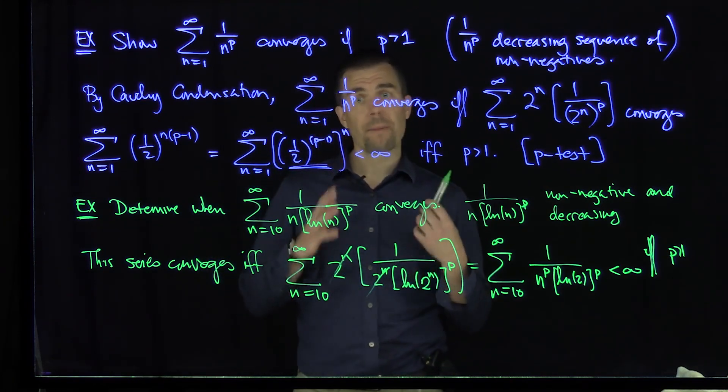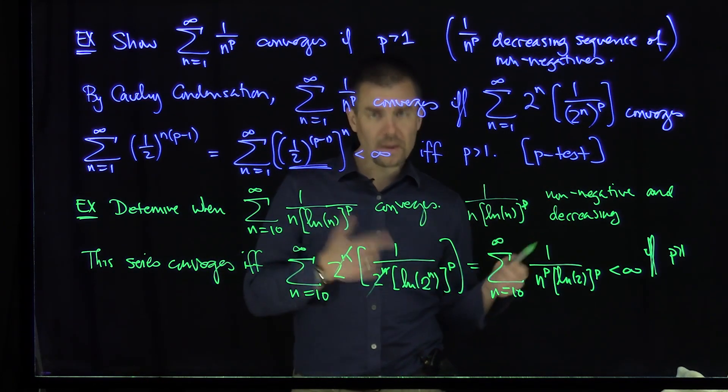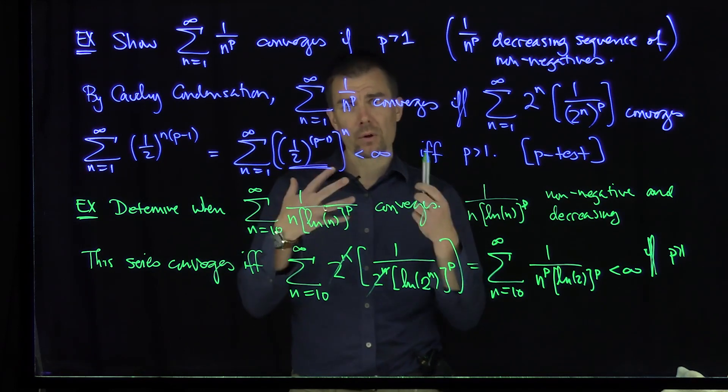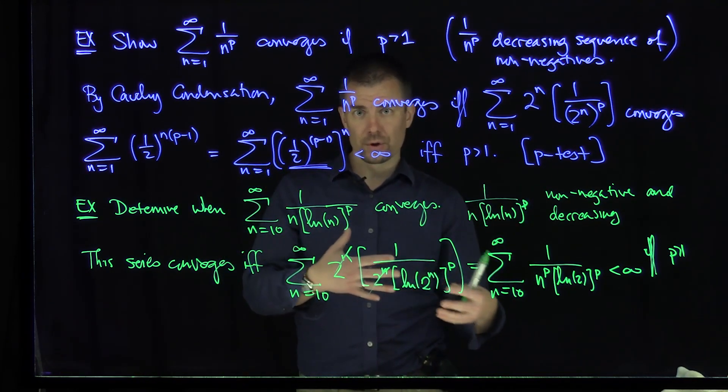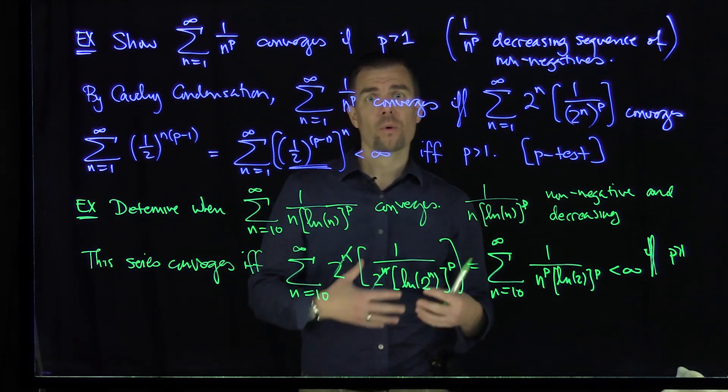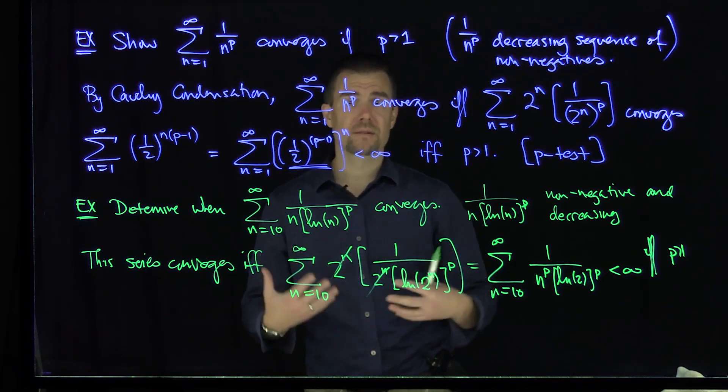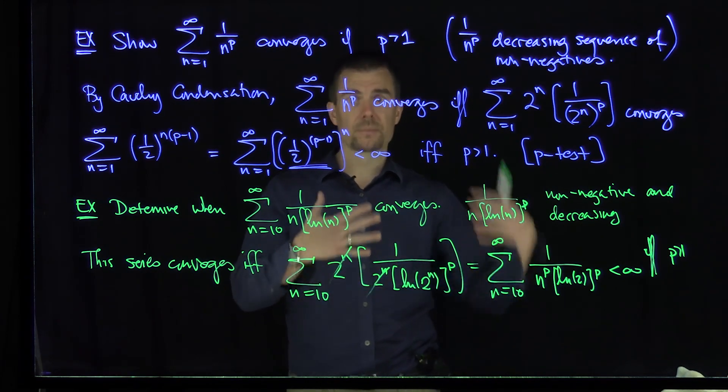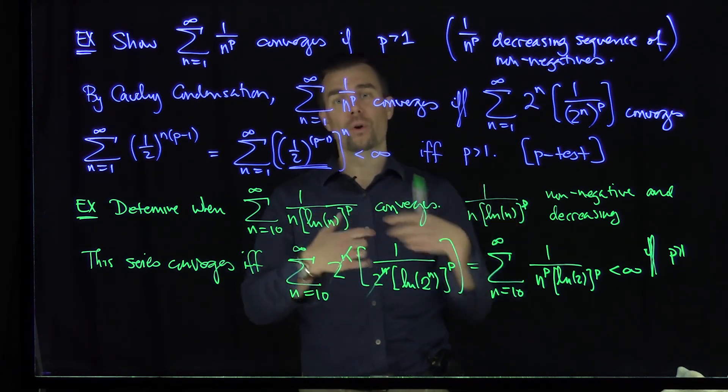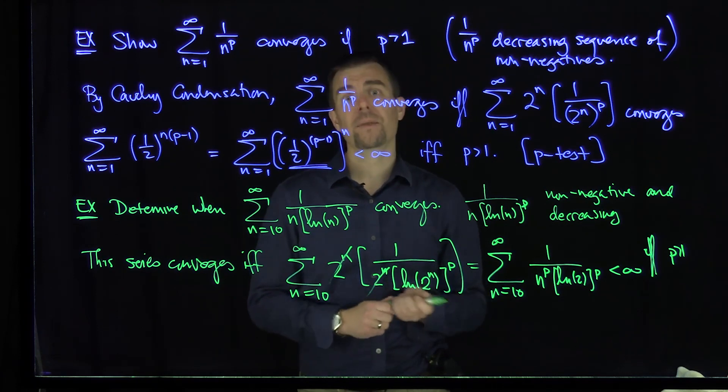And so we see from these two examples that the real power of the Cauchy condensation test, it will turn these power laws into a geometric series. It will turn logarithms back into powers. So whenever there's a problem that involves a series with lots of logarithms, feel free to use the Cauchy condensation test because it will take some of those logarithms and basically turn them either into powers or fewer iterations of logarithms. Thank you very much.